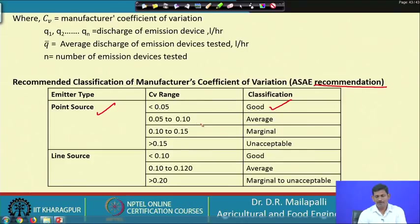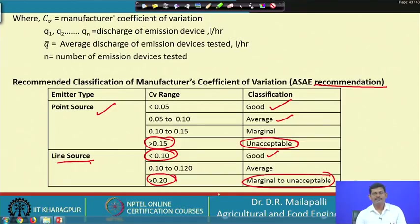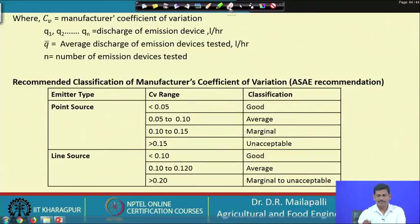For point source emitters, a CV of 0.05 to 0.1 is average, and more than 0.15 is unacceptable. For line source emitters, CV less than 0.1 is good and more than 0.2 is marginal to unacceptable. When you buy an emitter, you test it in the field, find out the CV, and compare with the manufacturer's values and this table to know whether the emitter works well.